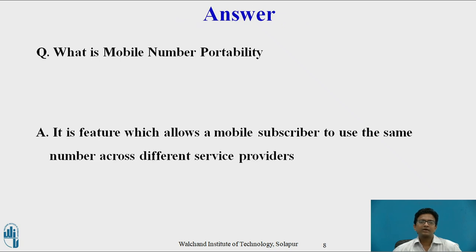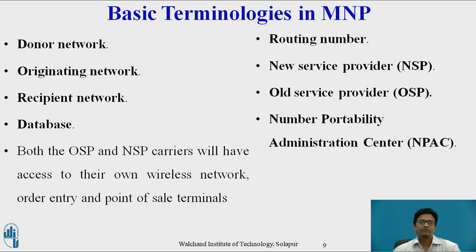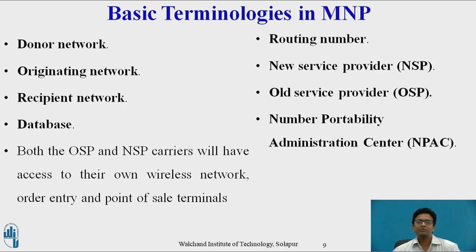Number portability is a feature which allows a mobile subscriber to use the same number across different service providers. The basic terminologies in mobile number portability are: donor network — the initial network where the number was located before being ported; originating network — the network where the calling party is connected; and recipient network — the network where the number is located after being ported.